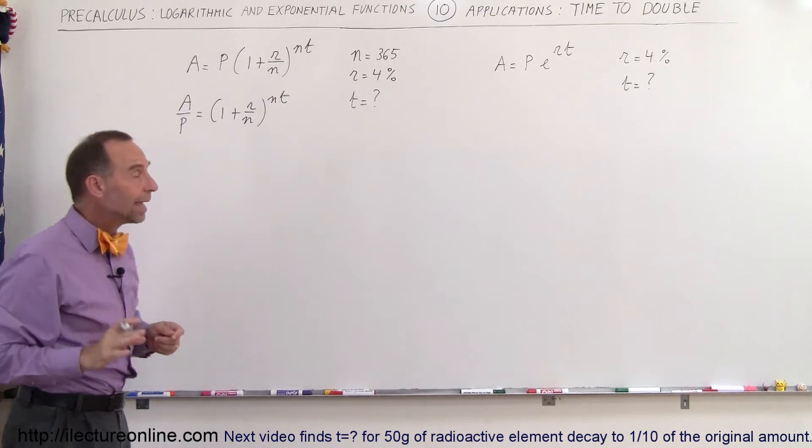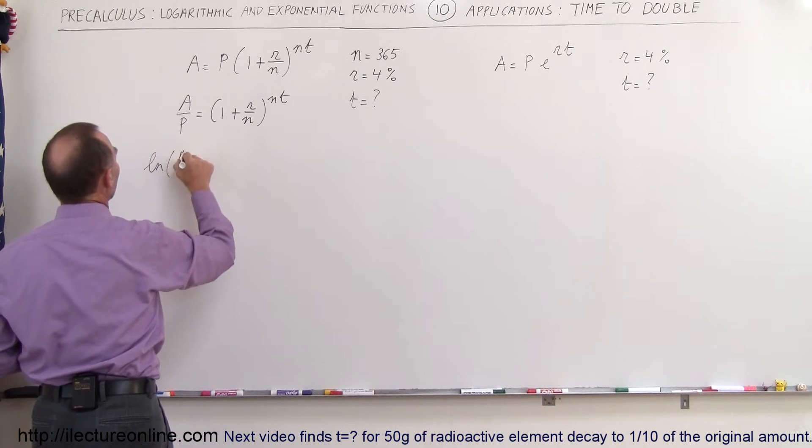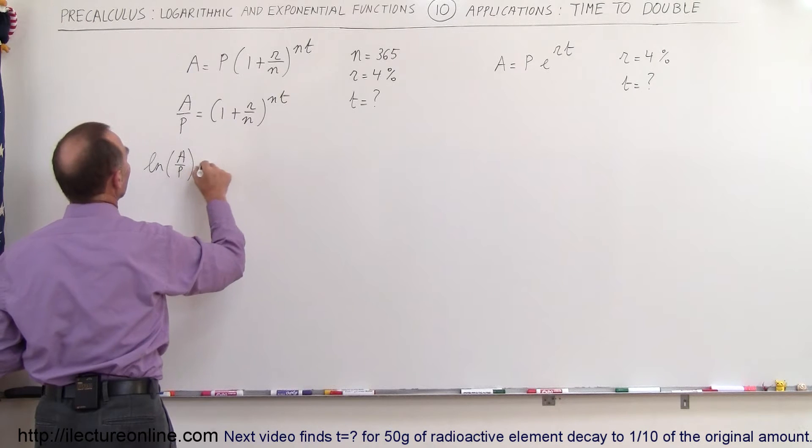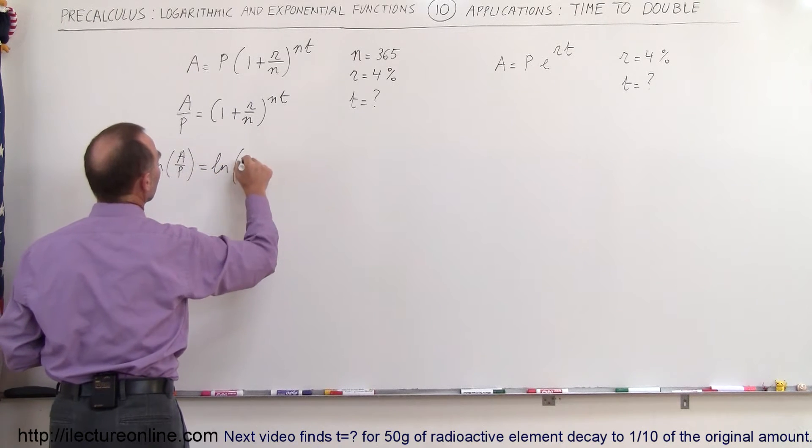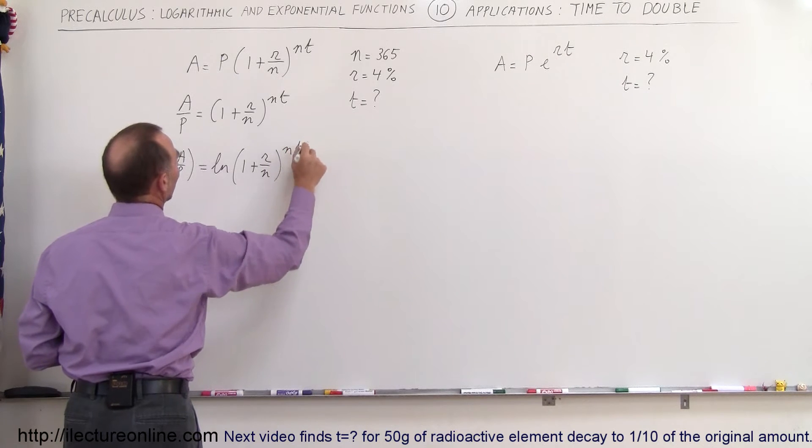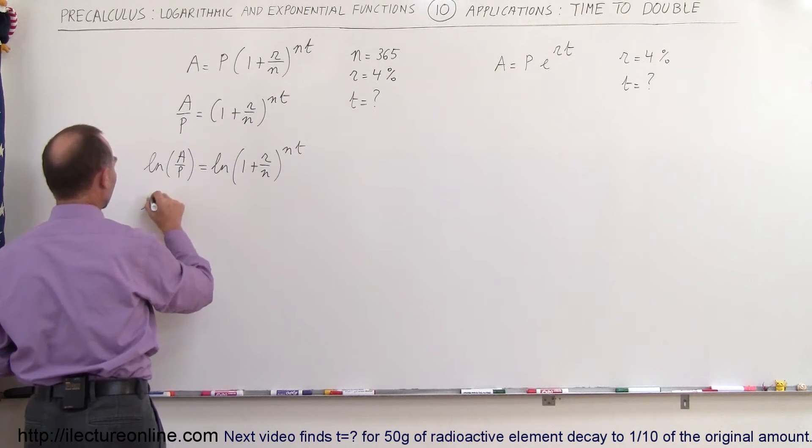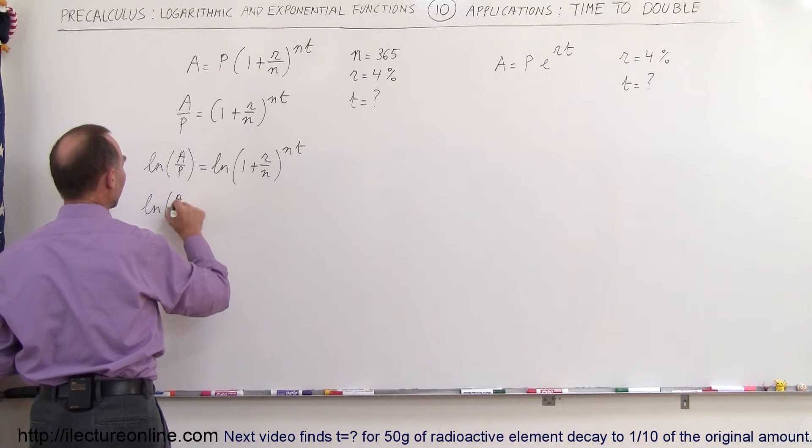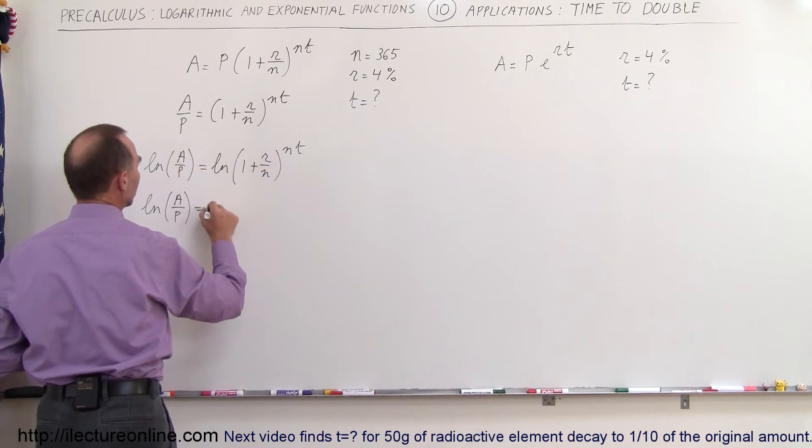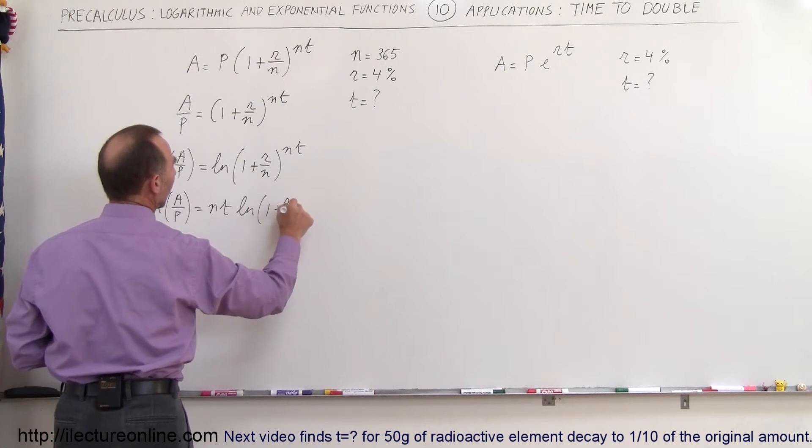Now we have the natural log of a divided by p is equal to the natural log of the quantity one plus r over n to the nt power. Now we're allowed to take this exponent and write it in front. So now we have the natural log of a divided by p is equal to n times t times the natural log of 1 plus r over n.